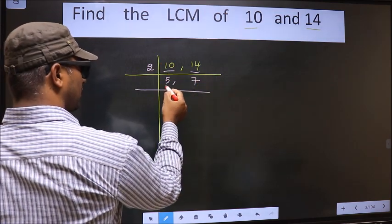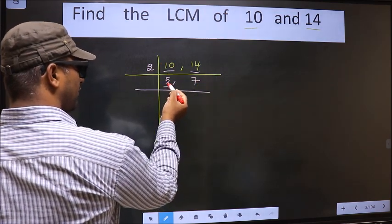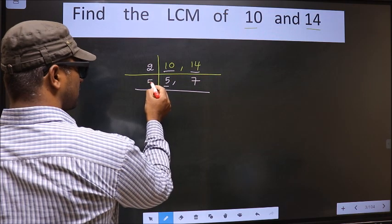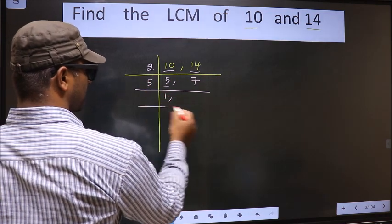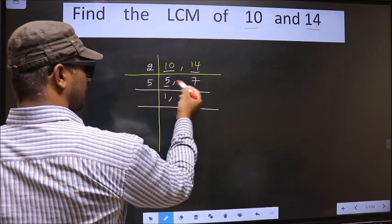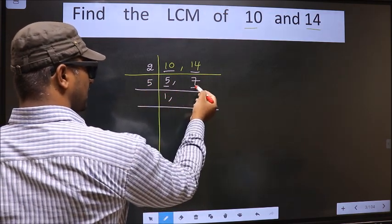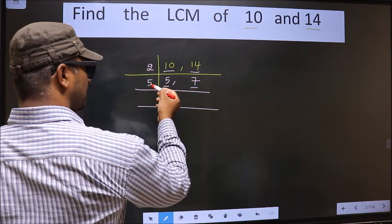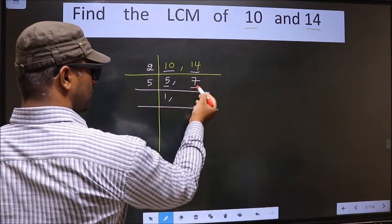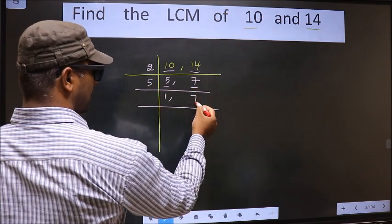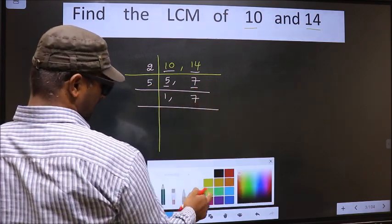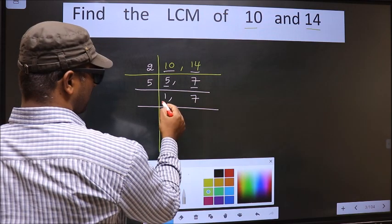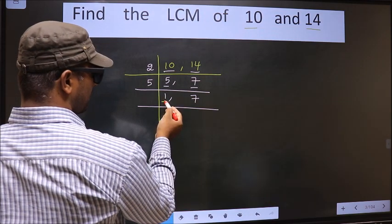Now here we have 5. 5 is the prime number, so 5 1s 5. The other number 7 is not divisible by 5, so you write it down as it is. We got 1 here.